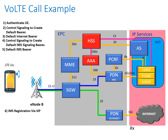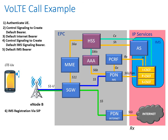At this point, we also have to interrogate the HSS a second time and the AAA server to verify who we are, whether we've paid our bills, and the type of services we have access to. In reality, the HSS and AAA server will be duplicated within the IMS core, but for simplicity I've kept just one HSS and one AAA server on this diagram.